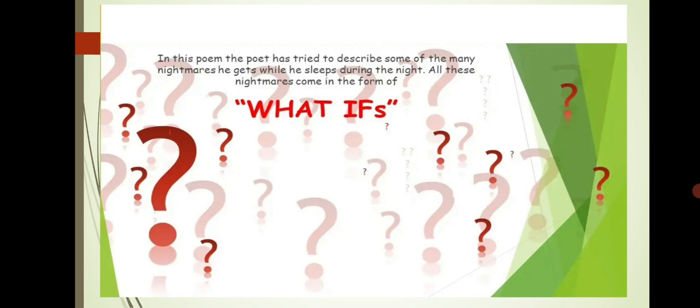So in this poem, the poet has tried to describe some of the many nightmares he gets while he sleeps during the night. All these nightmares come in the form of what ifs. So what is a nightmare? A nightmare means a bad dream. So the poet has tried to describe some of the many nightmares he gets while he sleeps during the night. All these nightmares come in the form of what ifs.